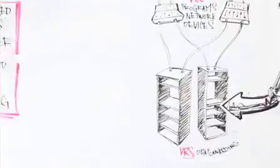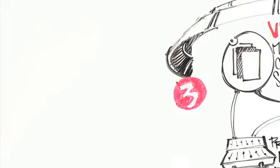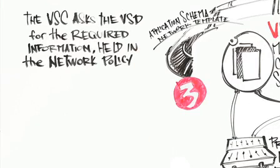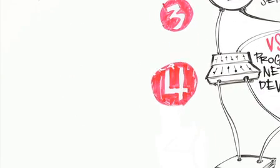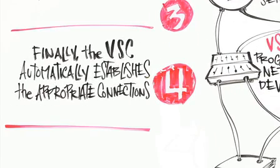The VRS detects the new virtual machine and asks the VSC how it should be connected. Then the VSC asks the VSD for the required customer information held in the network policy. Finally, the VSC automatically establishes the appropriate connections.